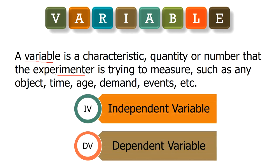Now there are two types of variable: independent variable and dependent variable. The independent variable is one that the experimenter changes or which changes on its own due to various factors. On the other hand, a dependent variable is a variable which is being measured. An independent variable determines the dependent variable, and so the dependent variable relies on the independent variable for its value. For example, the value of a car is dependent on the age of the car, so here the dependent variable is the value of the car while the independent variable is the age of the car.